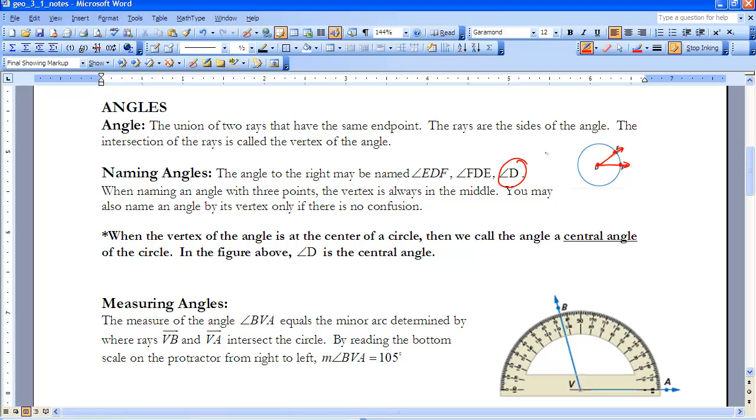When the vertex of the angle is at the center of the circle, we call that a central angle. So this is a central angle here because it's a part of the circle and the vertex is on the center of the circle.